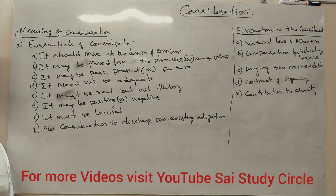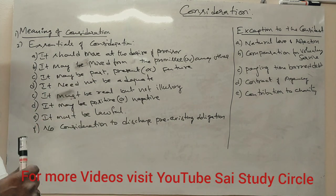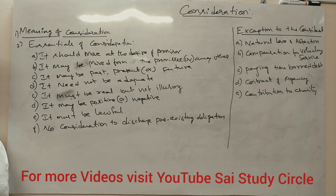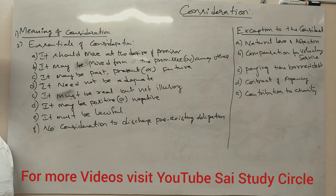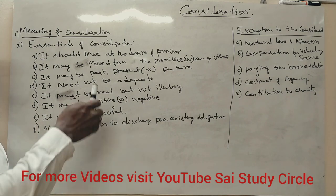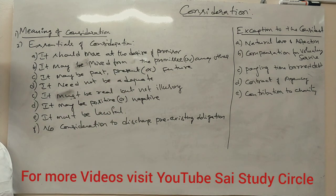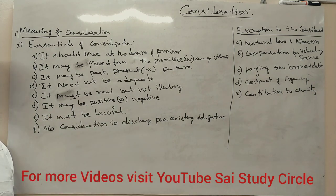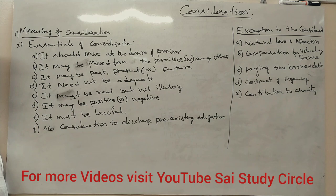The second essential is that the consideration may be moved from the promisee or any other person. It need not only come from the promisee — it can move from the promisor or any other person as well.